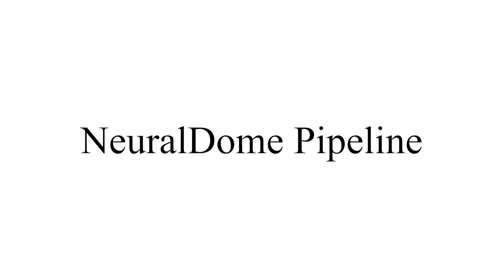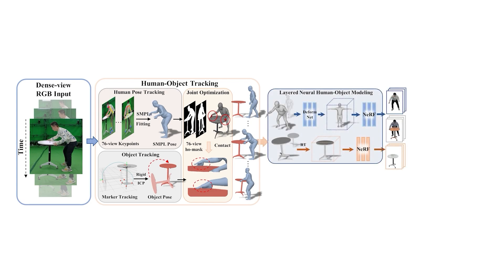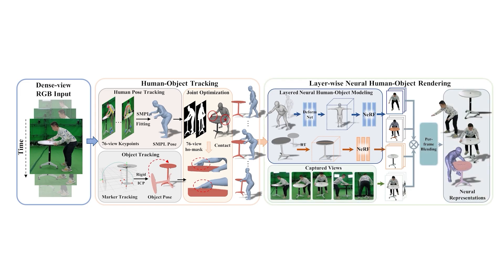To process the dataset, we develop the Neural Dome pipeline to produce rich digital assets. Given the 76-view RGB stream as input, we first jointly track human and object motion. With the tracked motion priors, we decouple the human-object interaction scenes via a layer-wise neural rendering scheme. Finally, with per-frame blending, we obtain the layer-wise neural representations in our HO-Dome dataset.